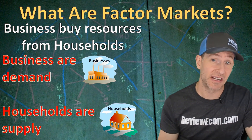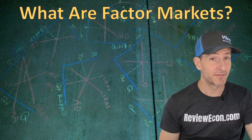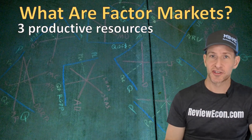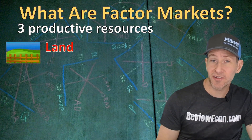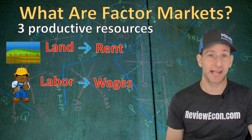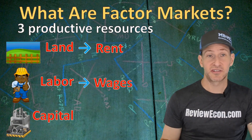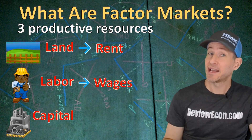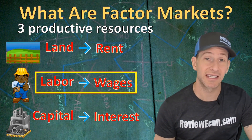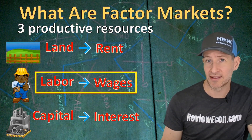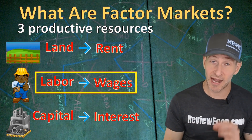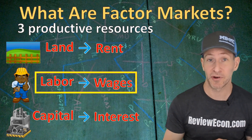In macroeconomics, you see that illustrated with the circular flow diagram of the economy. When it comes to the resources being purchased within factor markets, we have three productive resources. First is land, and monetary payments for land are called rent. Our second resource is labor, and payments for labor are called wages. Finally, we have physical capital — businesses usually take out loans to pay for physical capital, so payments for physical capital are called interest. In AP microeconomics, the resource we focus on most is labor and wages. Labor will be our example for this video, but all of these examples could apply equally to land and physical capital.